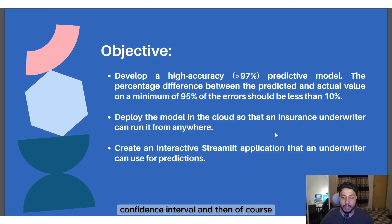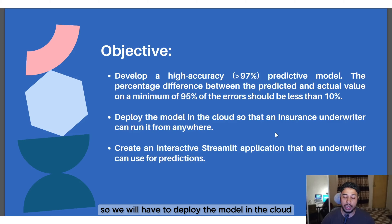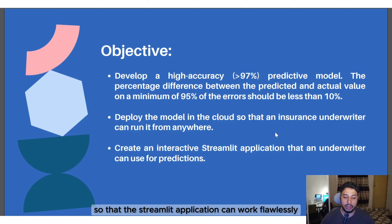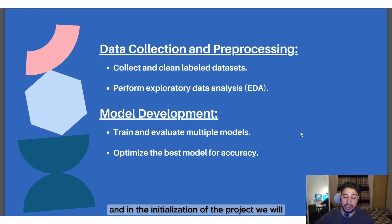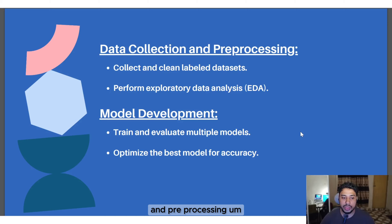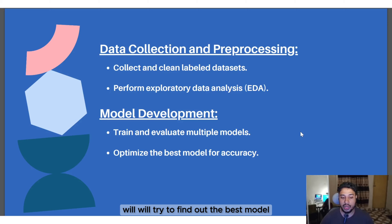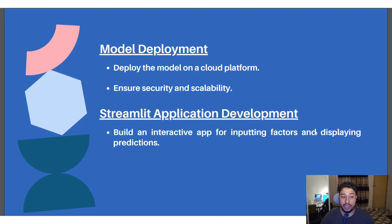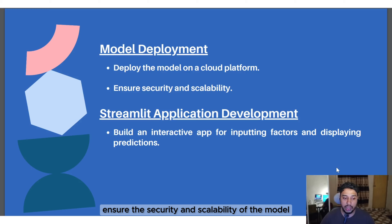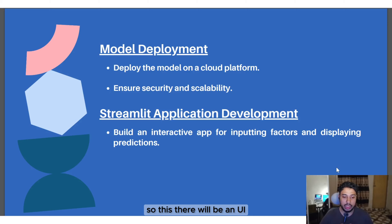Since this is going to be a Streamlit application, we will deploy the model in the cloud so the application can work flawlessly. We will start the project by collecting and preprocessing data, then develop different models to find the best one, deploy it, and ensure the security and scalability of the model.